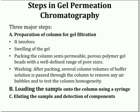Next are the steps in gel permeation chromatography. Three major steps are used: first, preparation of the column for gel filtration; second, loading of the sample onto the column using a syringe; and third, eluting the sample and detection of components.